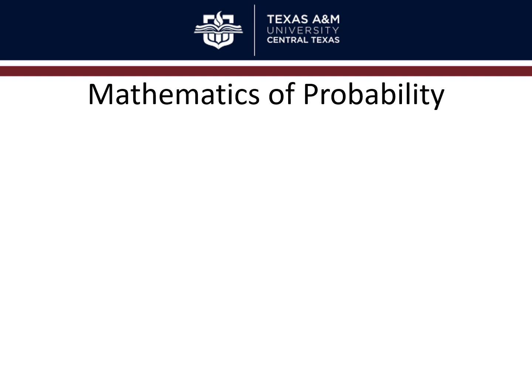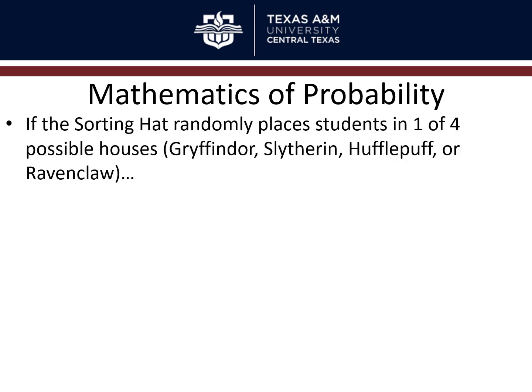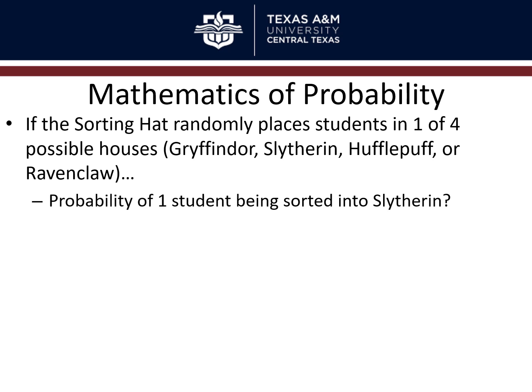Let's apply that to an example. If the sorting hat randomly places students in one of four possible houses — Gryffindor, Slytherin, Hufflepuff, or Ravenclaw — not based on where you actually belong, just total random chance, then the probability of any one student being sorted into Slytherin would be one out of four possible outcomes, so one divided by four, which is 0.25, or 25%.